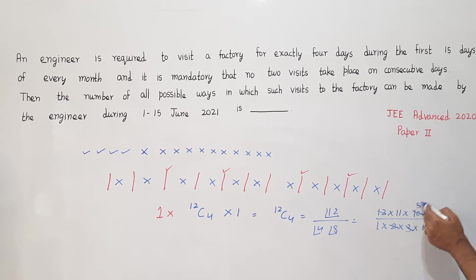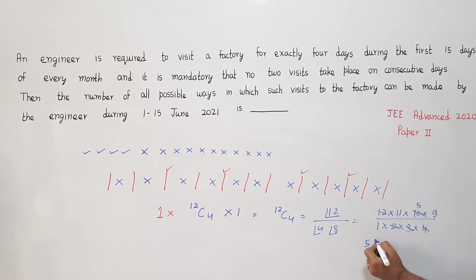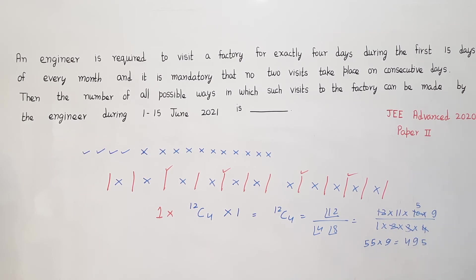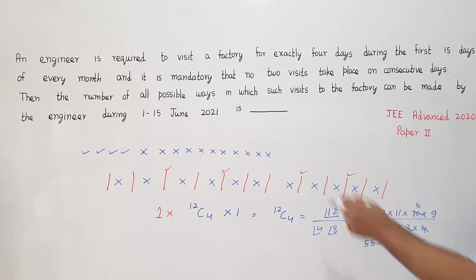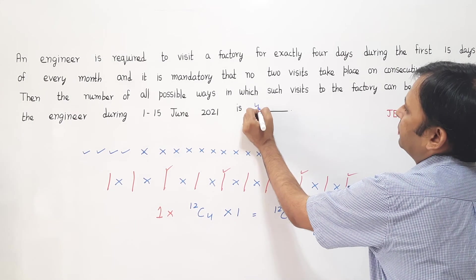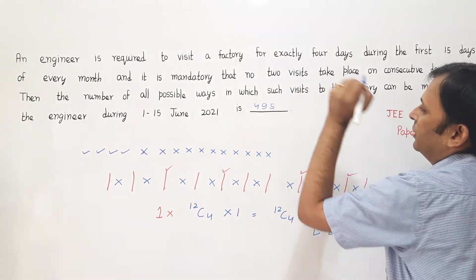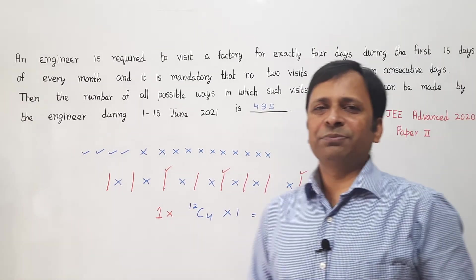So 55 multiplied by 9, that will give me 5 here and 45 plus 4 is 49. So the total number of ways by which the engineer can make a visit is 495. So the answer to this question is 495.